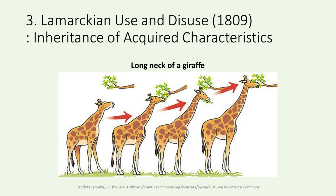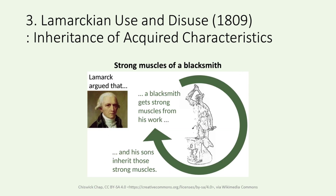One of his notable examples was the elongation of a giraffe's neck, suggesting that generations of stretching to reach higher leaves would lead to longer-necked descendants. Another well-known illustration is how a blacksmith's work enhances the muscles in his arms, leading his sons to acquire comparable muscle development as they grow older. While some aspects of Lamarck's ideas have been refined or reconsidered, his contributions raised foundational questions about how species change over time.